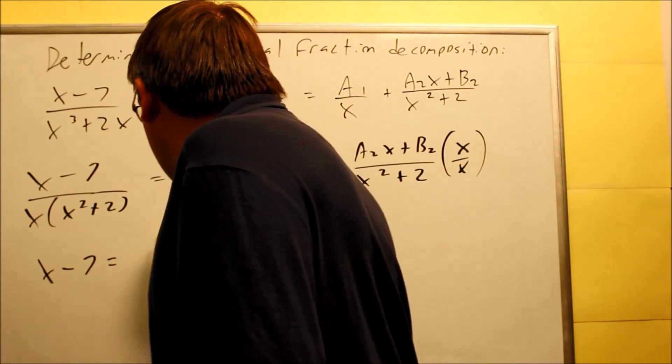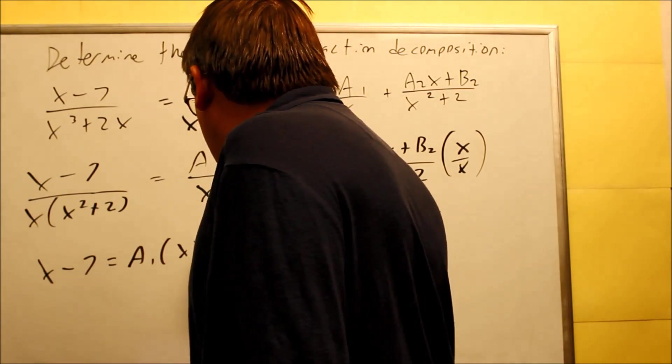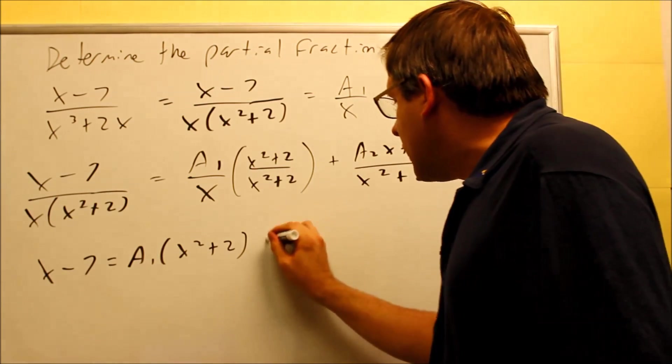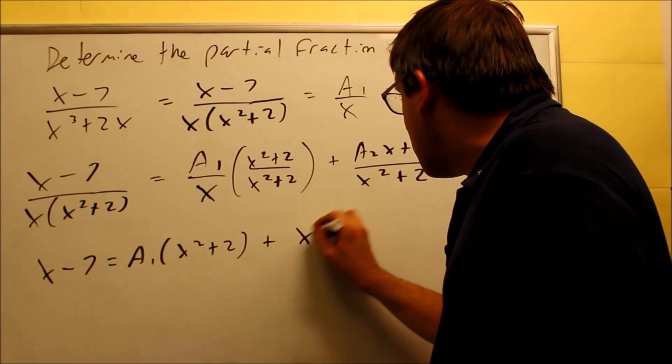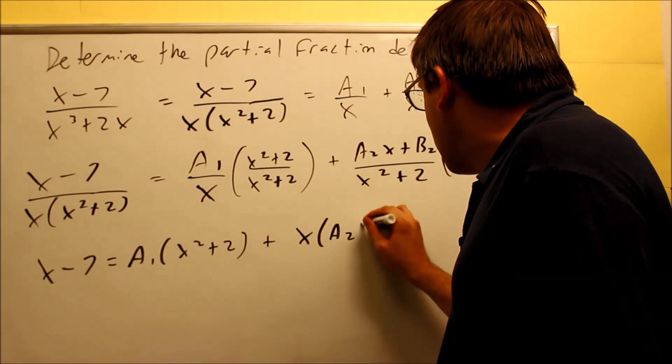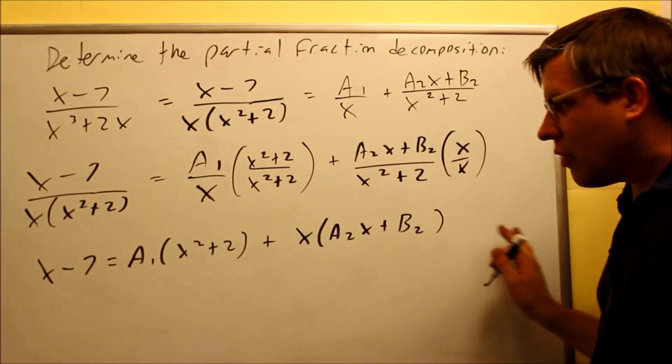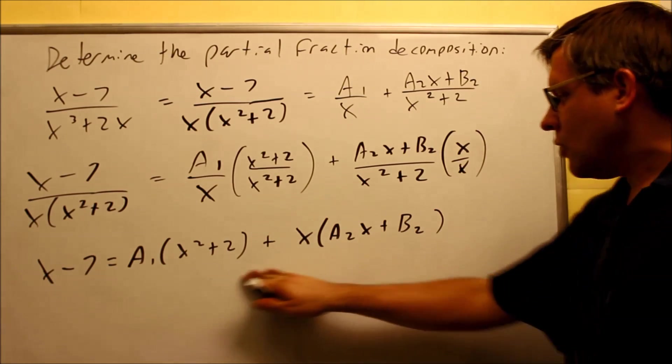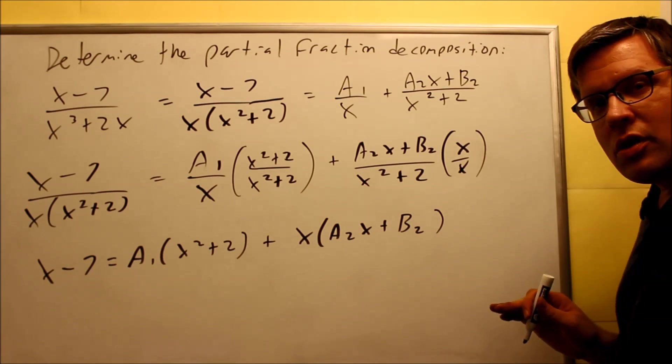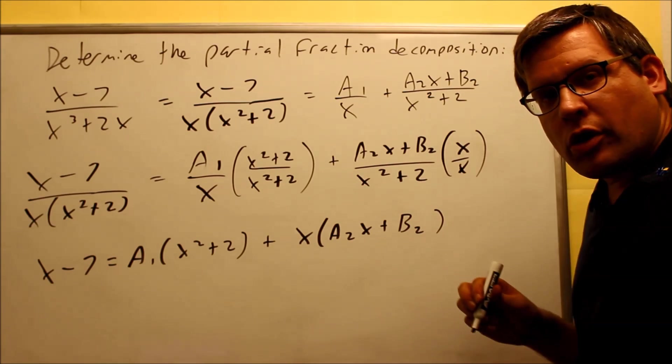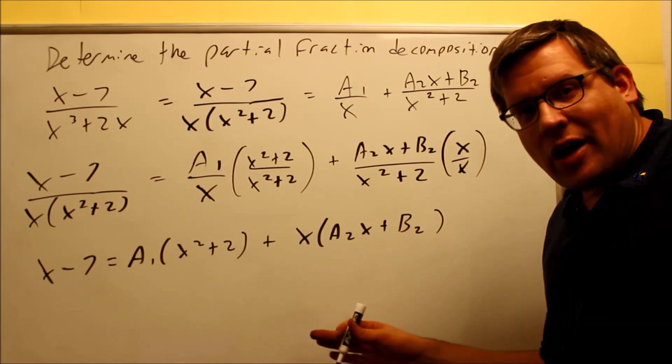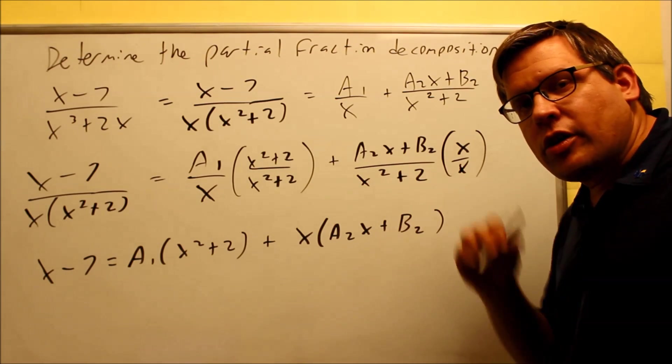So you have x minus 7 is going to equal a1 times x squared plus 2. And then the next one is I have an x times all this. So I'm just going to go ahead and keep it x times a2x plus b2. So now this is going to be our equation that we're now going to use. And so next thing we have to do is decide whether we want to use the convenient values method or if we want to use the equating coefficients method.